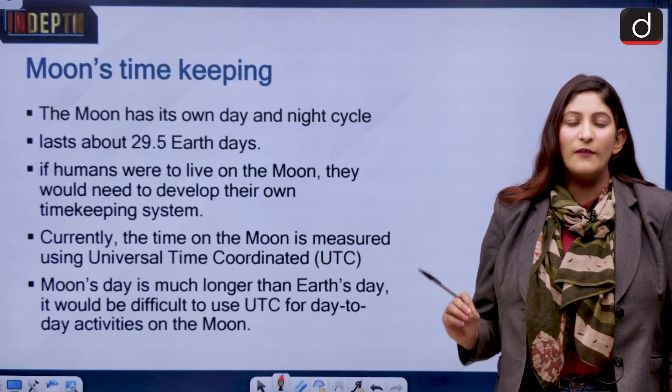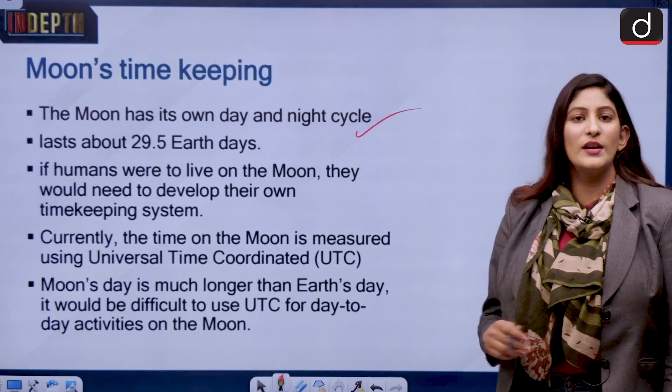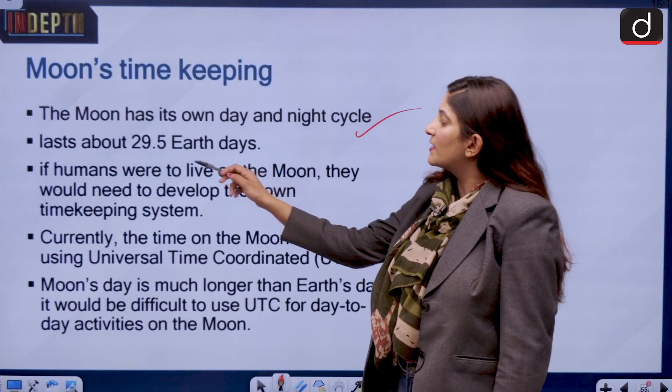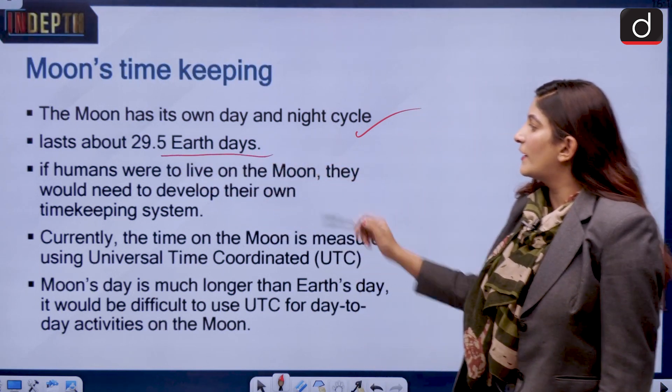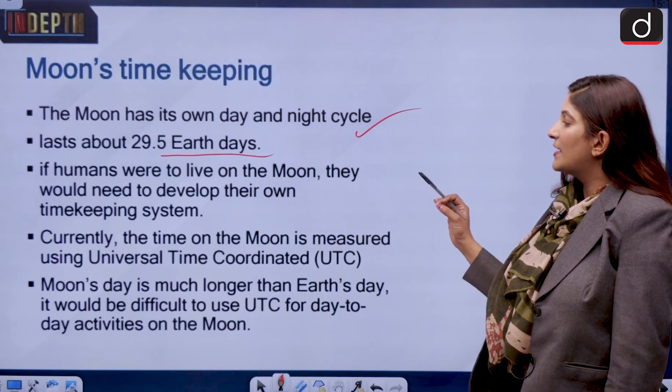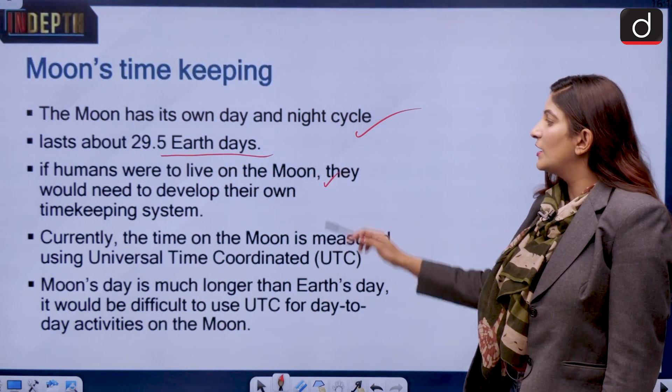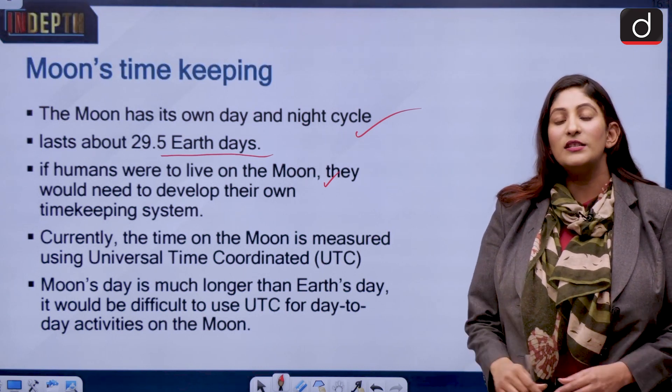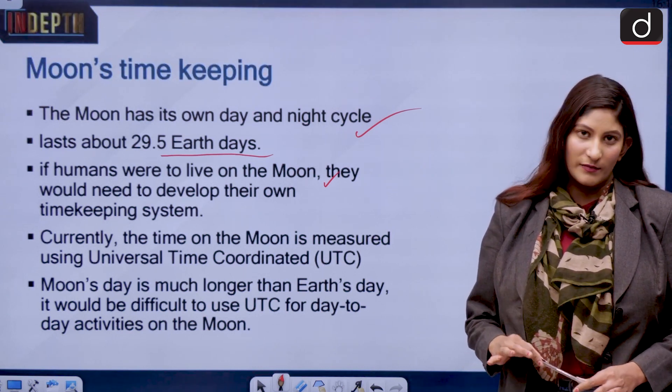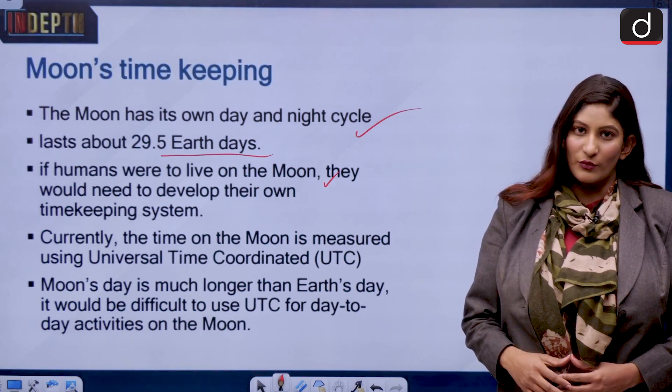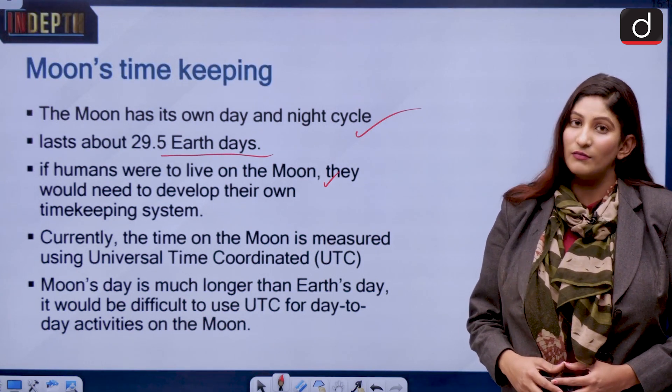Now we have to know that the moon has its own day and night. It doesn't work like the earth and that lasts about 29.5 earth days. For example, if humans were to live on the moon they would need to develop their own timekeeping system. Scientists and astronauts are thinking to colonize the moon, so maybe because of that also it is happening.